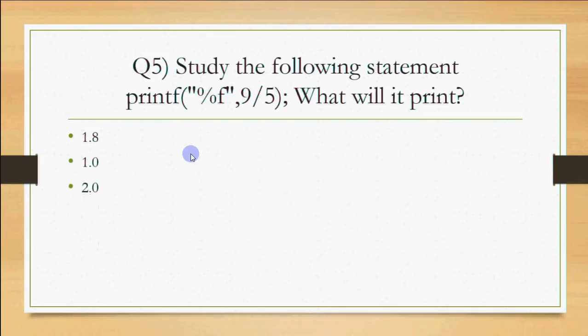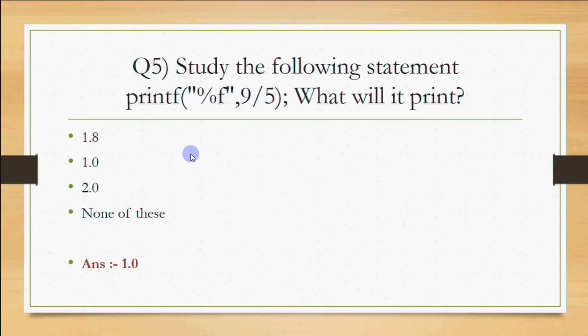The options are 1.8, 1.0, 2.0, and others. The answer is 1.0, because integer division does not round off — it truncates the decimal part. So 9/5 gives 1, displayed as 1.0. If you wrote 9/5.0 or 9.0/5, then the result would be 1.8. Whenever an integer is divided by an integer, the result is always an integer — this is called implicit typecasting.